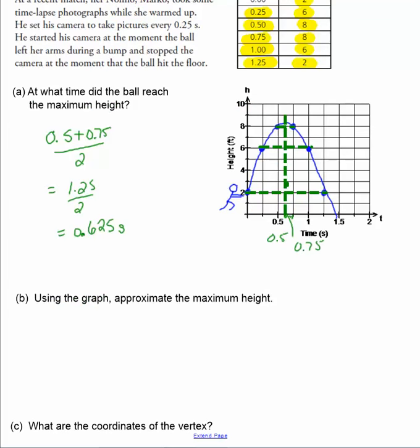The next part of the question is to use the graph to approximate the maximum height. So what would the maximum height be? We're all going to approximate a value here because it's going to be off by how the graph is sketched, how accurate it is. Now that we know when the maximum height occurs, we can find the maximum height.